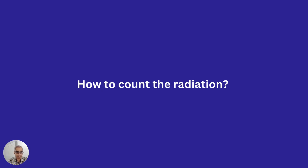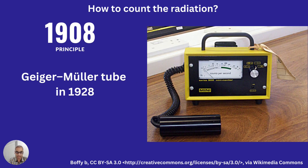How do we count radiation? The idea was proposed in 1908, but it took almost 20 years to build the first Geiger-Müller tube. Geiger and his PhD student Müller designed the first GM tube in 1928.